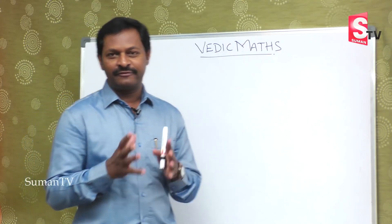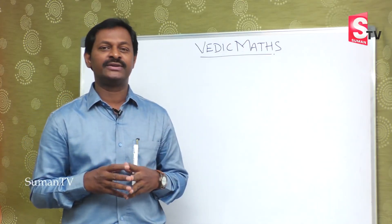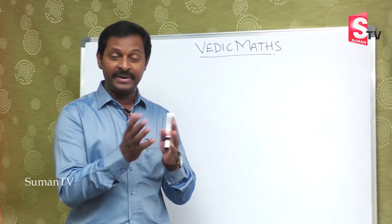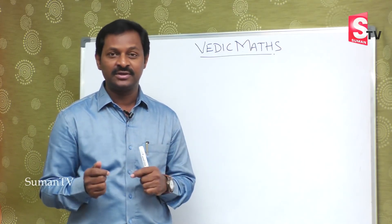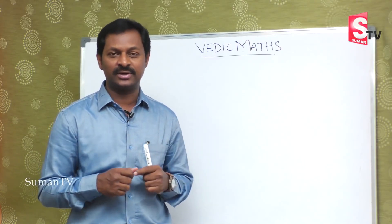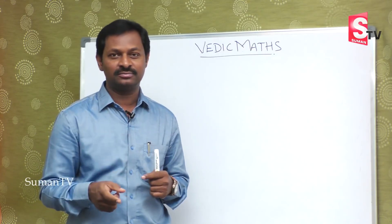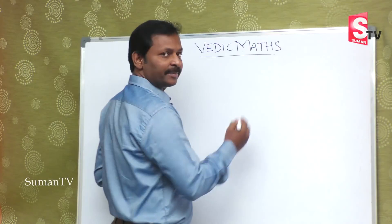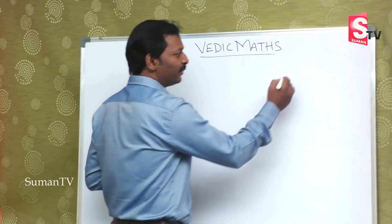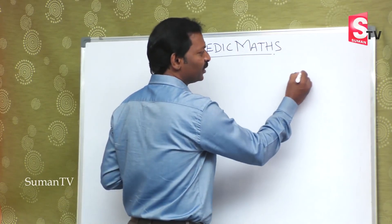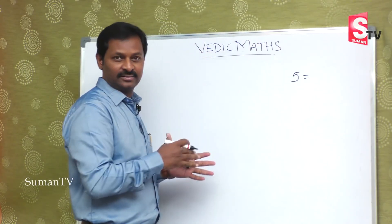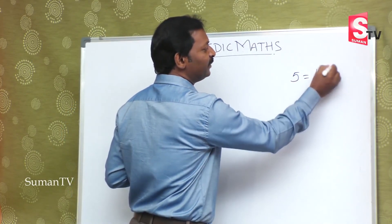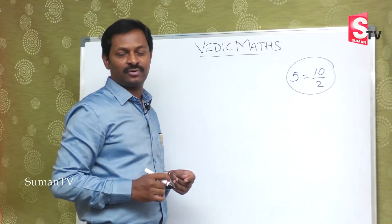So, five — we already saw this in our previous episodes in the multiplication section. Five means we convert it as ten by two. Keep this in the mind. Suppose, if you take the number five — how are you going to convert five? Five means, from our previous episodes, ten by two. Keep this in mind. That's it.